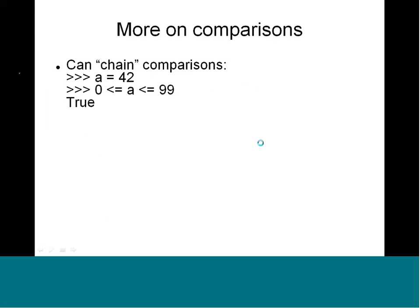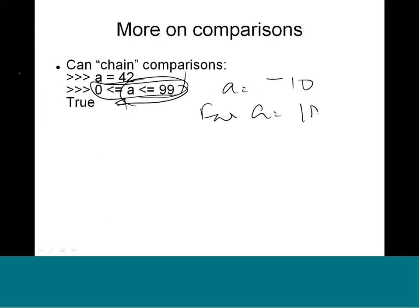In Python you can chain multiple comparisons in the same line — this goes to the shorthand notation. For example: 0 <= a <= 99. If a is 42, this expression returns true. But if a is -10, this evaluates to false even though one side may be true. And if a is 100, it also returns false because the right side fails. So you can specify these shortcut chained comparisons, which saves a lot of time and code.